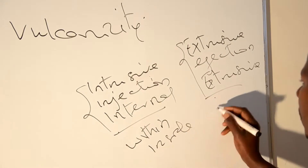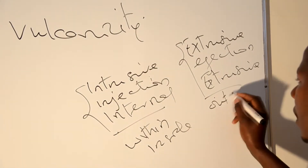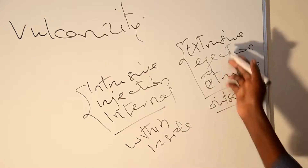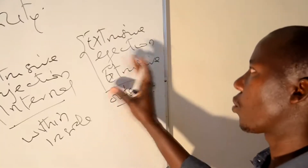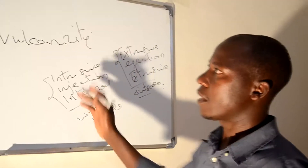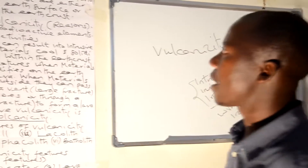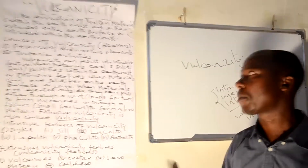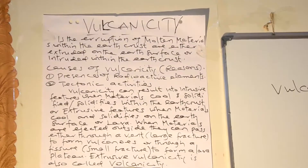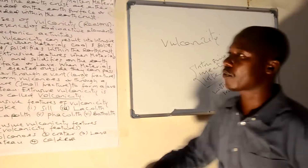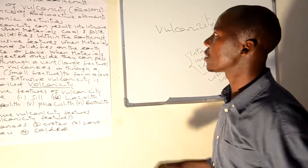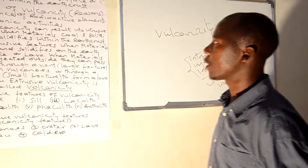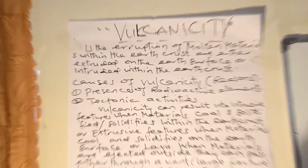Extrusive means material coming out — outside, external injection. Extrusive is when material comes on the earth's surface. Whenever we talk about eruption, this is when material is moving from within the crust and comes on the earth's surface or remains within the earth's crust, originating from a source or formation, or intruded within the earth's crust.